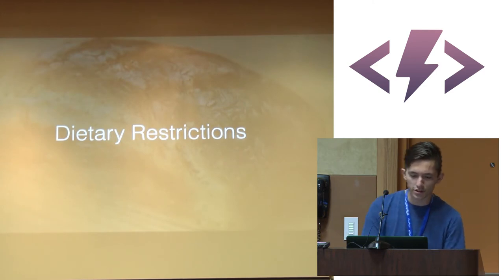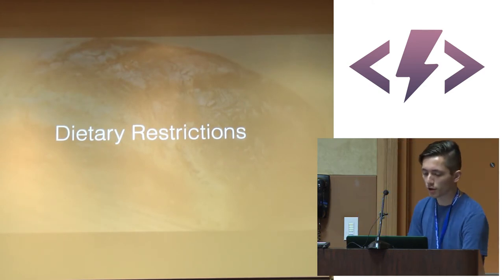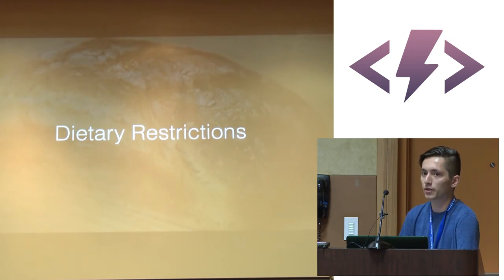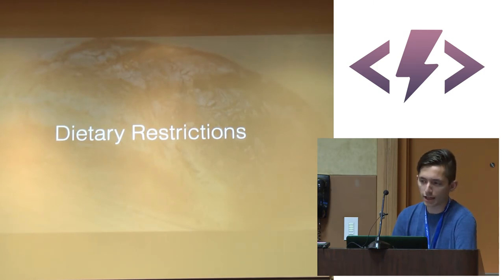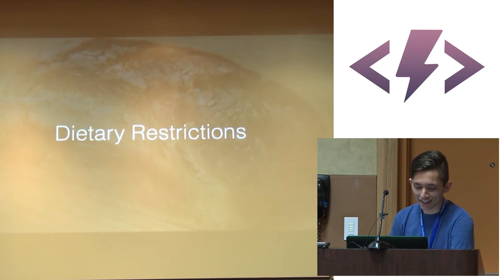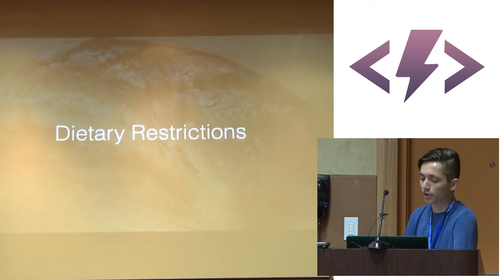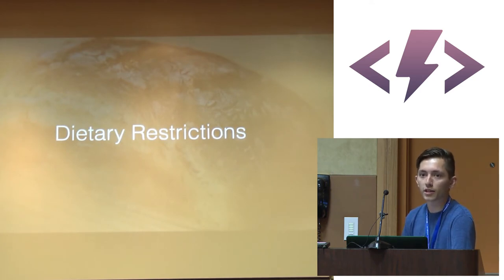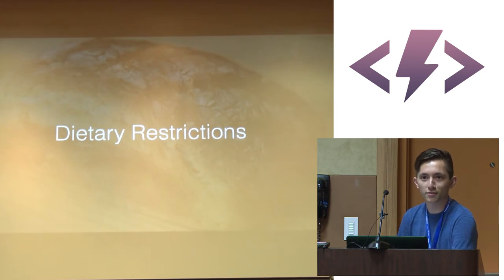Yelp knows you have a gluten intolerance so it automatically filters out places without gluten-free options. Or let's say your calendar knows you metabolize caffeine slowly, so it warns you when you check into a coffee place on Foursquare: 'Hey, don't drink too much coffee — you've got a meeting later.' Or hey, maybe you shouldn't stay up super late drinking coffee working on your talk the night before you have a conference at 9 a.m.